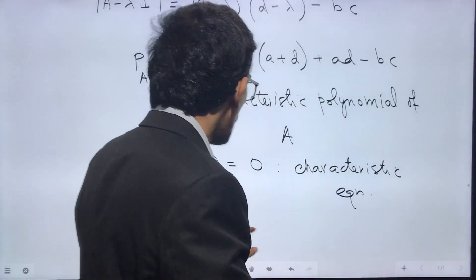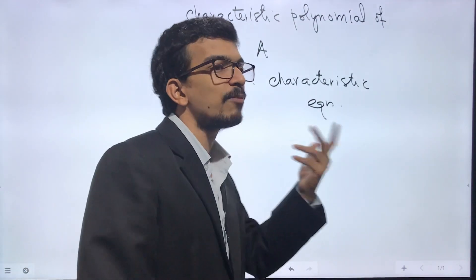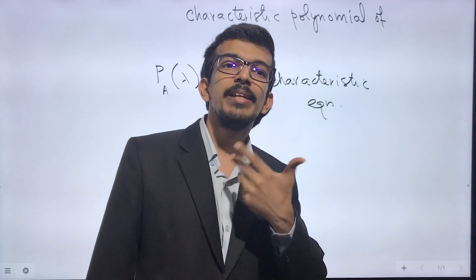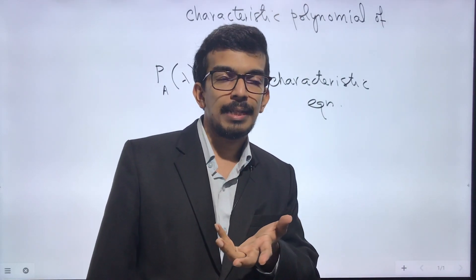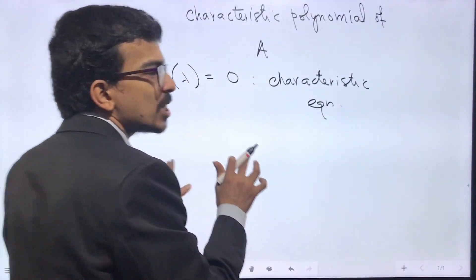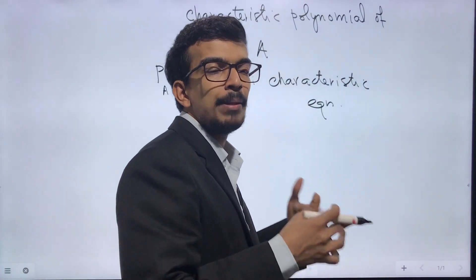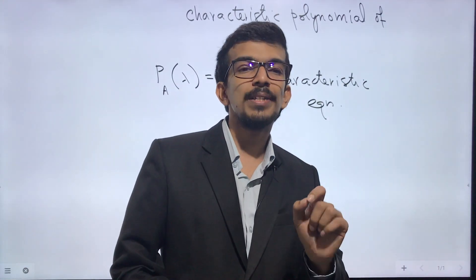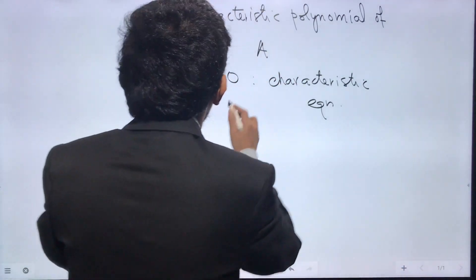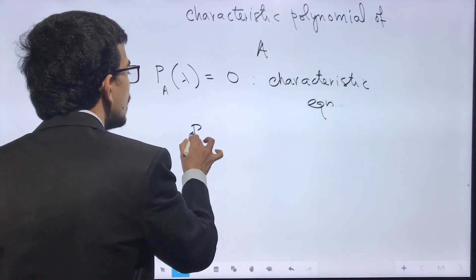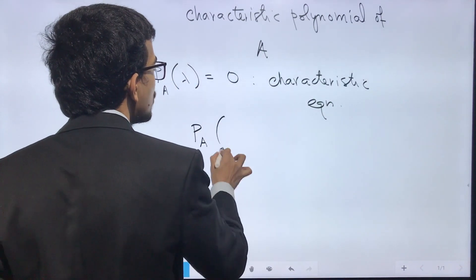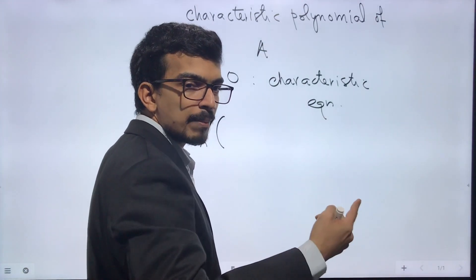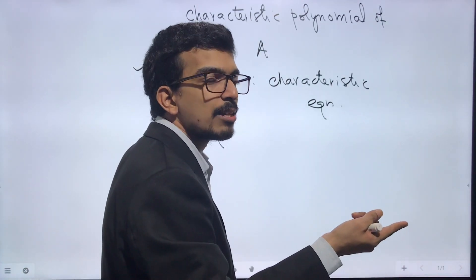Now what does Cayley-Hamilton theorem say? This is an advanced concept — I won't prove it, but you will learn it in linear algebra in higher classes. Cayley-Hamilton theorem says that every square matrix satisfies its own characteristic equation.